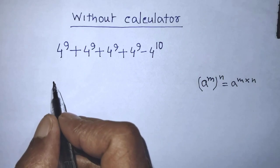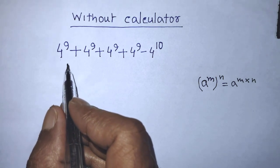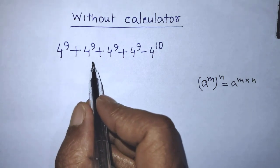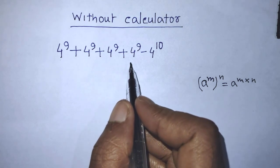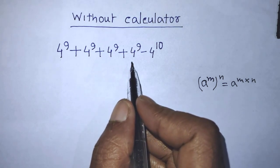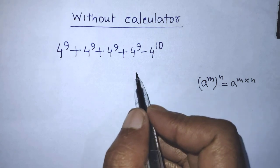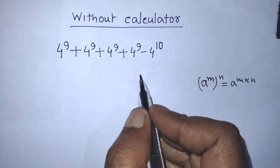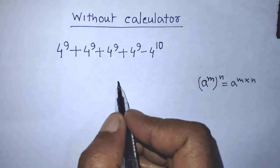Hi guys, welcome back to my channel Olive Mass Blog. Today our question is: 4 to the power 9, plus 4 to the power 9, plus 4 to the power 9, plus 4 to the power 9, minus 4 to the power 10. In this video I will tell you how to simplify this algebraic expression.